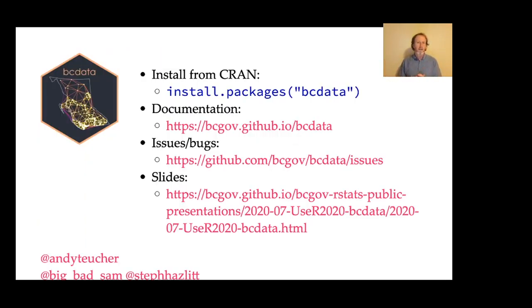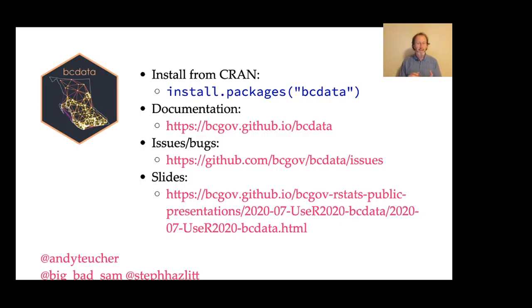BCData is on CRAN — you can use install.packages to get it. We have a pkgdown site at bcgov.github.io/bcdata with some nice vignettes. Please file any issues or bugs you find on the GitHub page, and hit myself, Sam, or Steph Hazlitt on Twitter — those are our handles — and find us on GitHub as well.